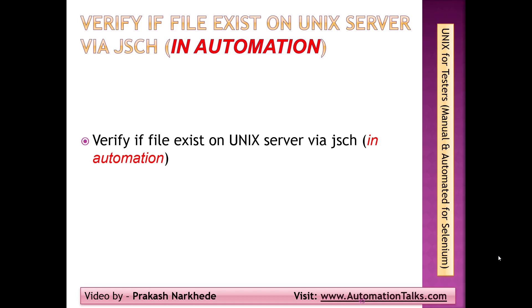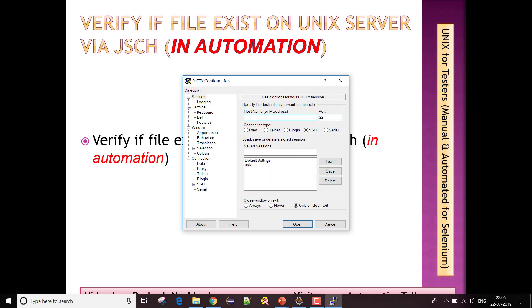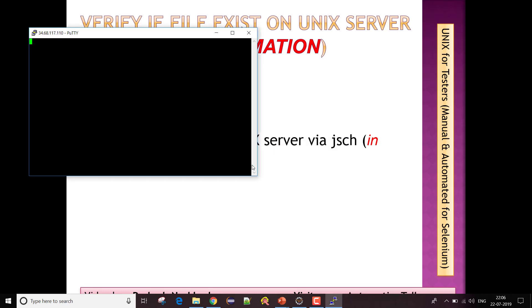Hello there, welcome back to the course of Unix for Testers. In this video, I'm going to show you how you can verify if a particular file exists on a Unix server or not, with the help of JSch, which is a Java SSH library. We can use this piece of code in a test automation framework if we have such a requirement. Let me log in to my Unix server.